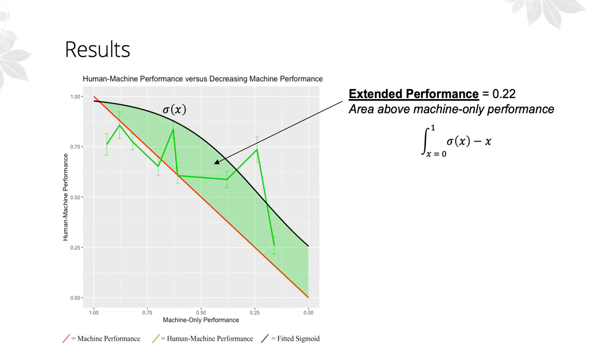First, we operationalize extended performance to be the area under the sigmoid curve that is above our machine-only reference line. Therefore, our model of performance expects our human-machine team to perform overall an additional 22% better than the machine alone across the entire range of challenges.